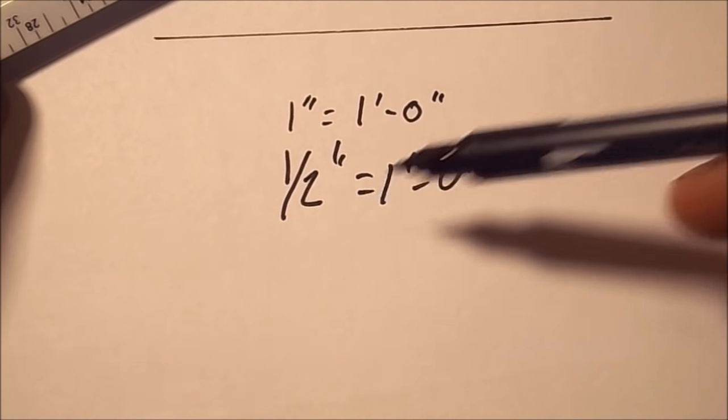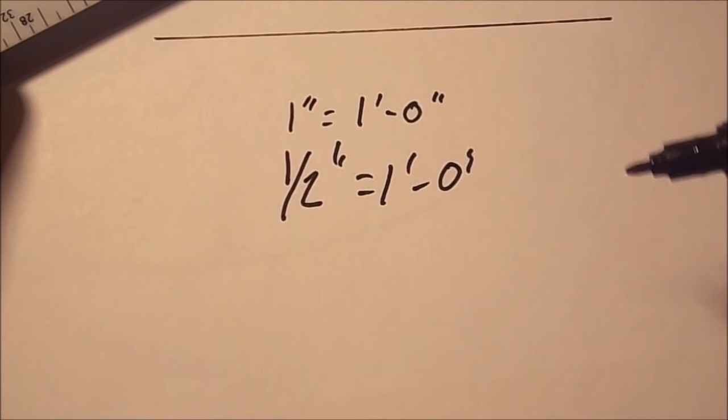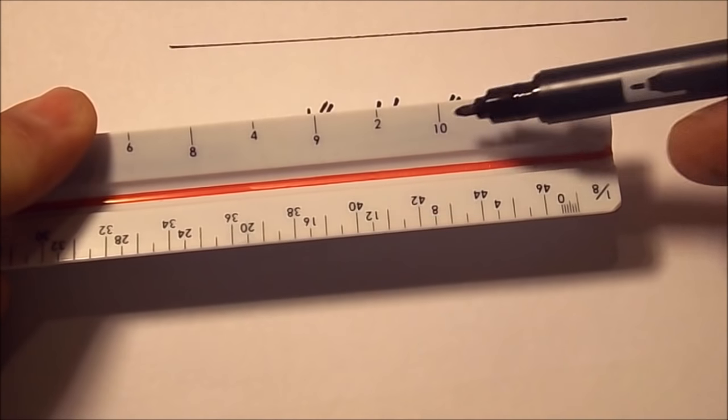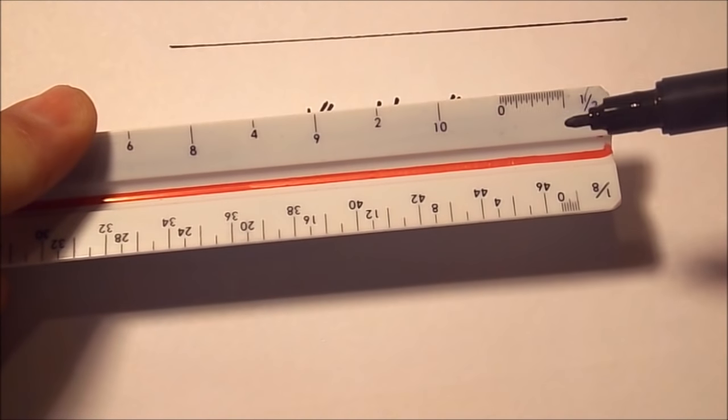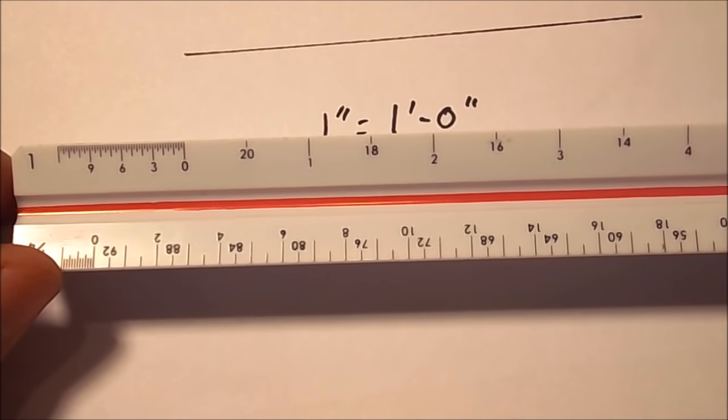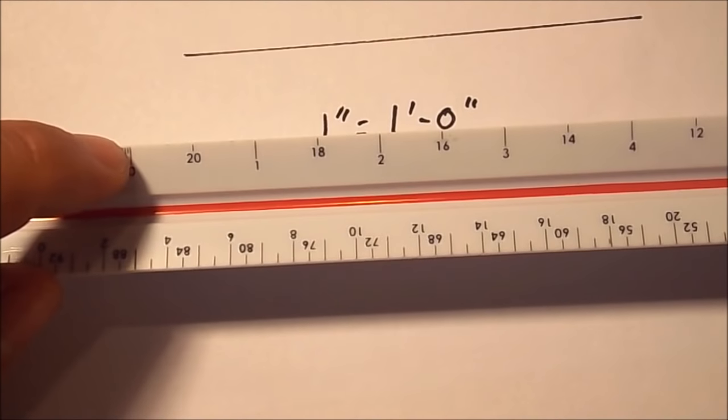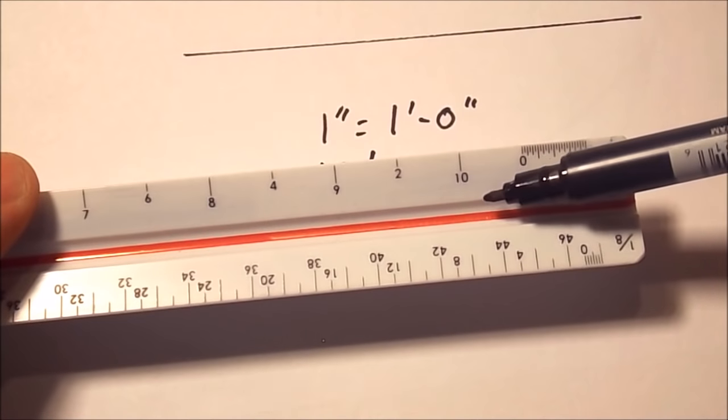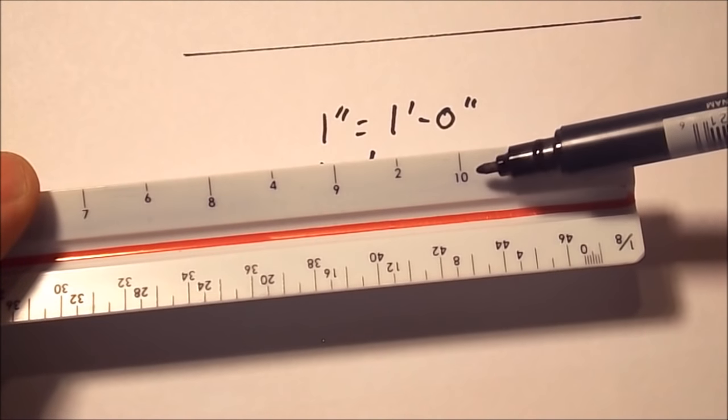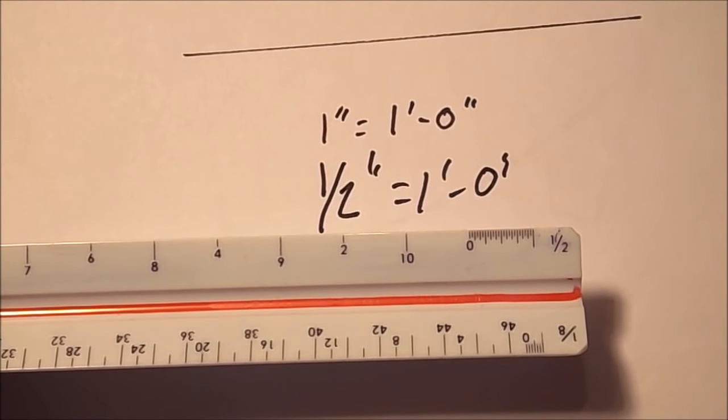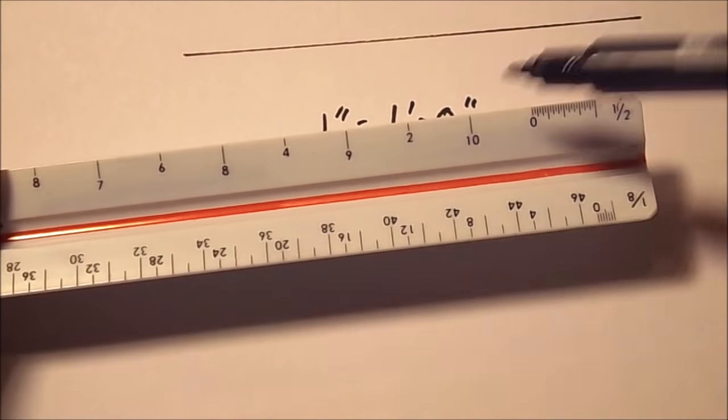One half inch equals one foot zero inches, so for every half inch we're measuring we're getting one foot. So that's obviously not 10 feet, that's just half an inch. The 10 is coming from the other direction. We've got the one inch scale going from left to right, so we start at zero and then one, two, three, four and so on, all the way until we get to 10 at the opposite end.